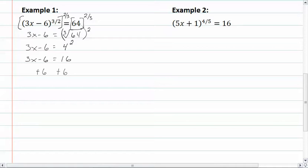Now we finish solving. We get 3x equal to 22. Divide by 3, and we get x is equal to 22 thirds.